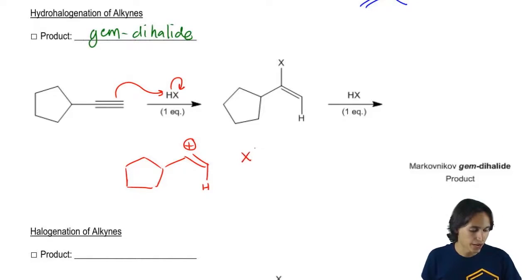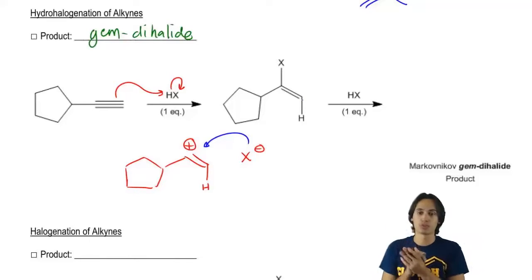Then that positive charge would grab – or I'm sorry, the X would grab the positive charge and I would get my intermediate, my first product.